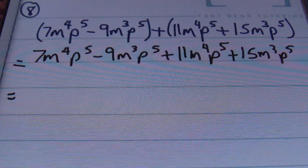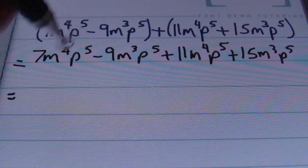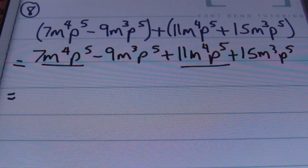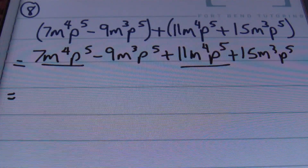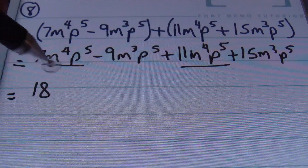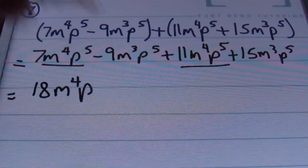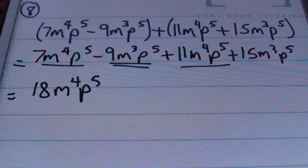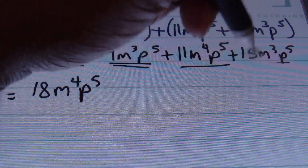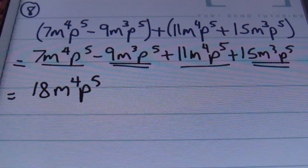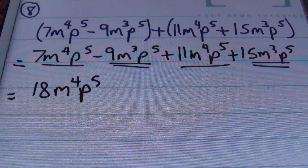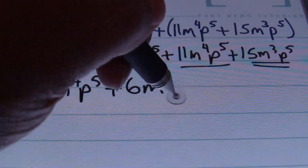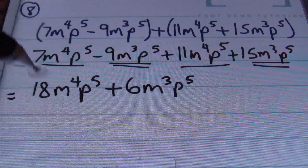I notice that my m is to the 4th power and also to the 3rd power, so I'll start with the highest — my m to the 4th power p to the 5th power terms. Combining the coefficients, 7 plus 11 gives me 18m to the 4th power p to the 5th power. Then, combining the negative 9m cubed p to the 5th power with a positive 15m cubed p to the 5th power: negative 9 and positive 15 — unlike signs subtract — so I end up with a positive 6m to the 3rd power p to the 5th power. This is my answer for problem number 8.